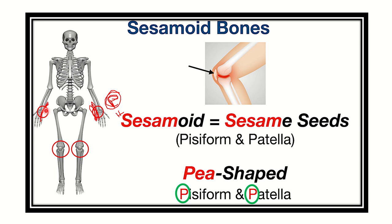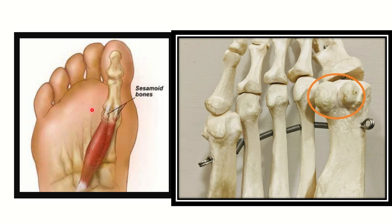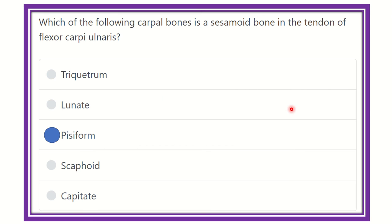The pisiform is located in the medial or ulnar aspect of the hand. We can see other sesamoid bones here as well. It is clear that the pisiform is one of the sesamoid bones, and this sesamoid bone is located at the tendon of the flexor carpi ulnaris muscle. It is one of the carpal bones. Thank you.